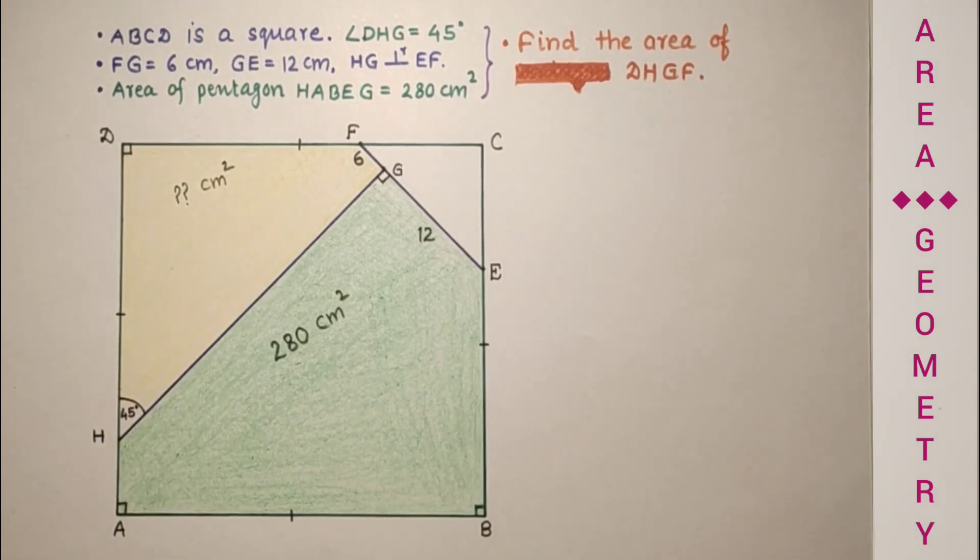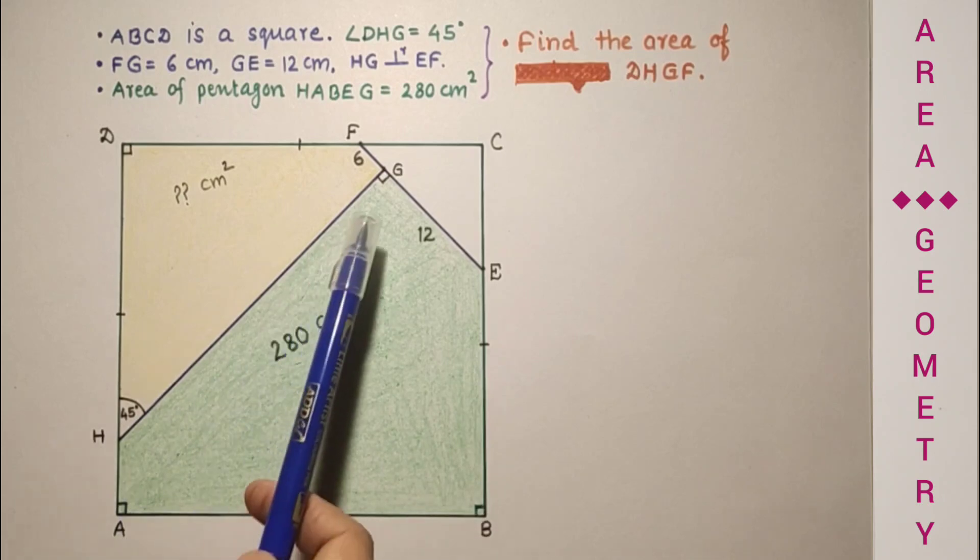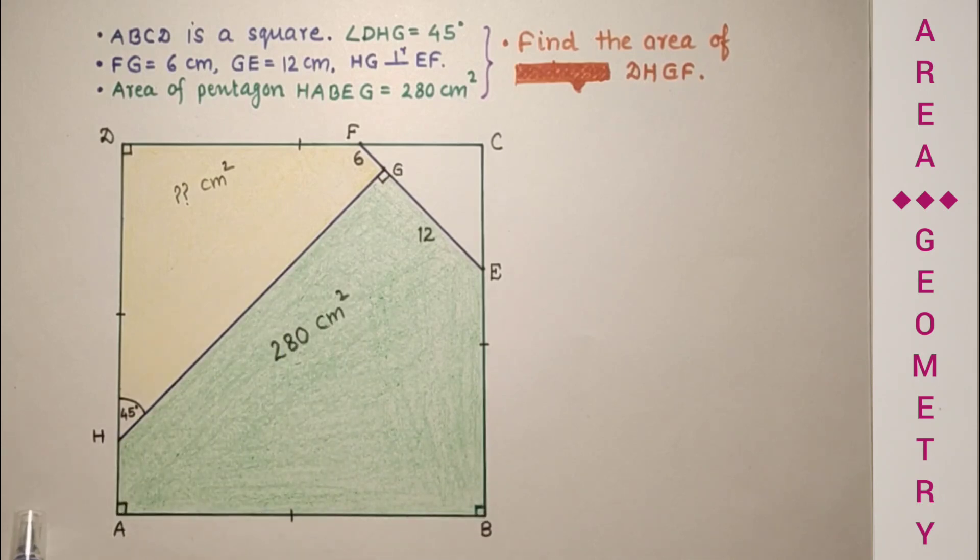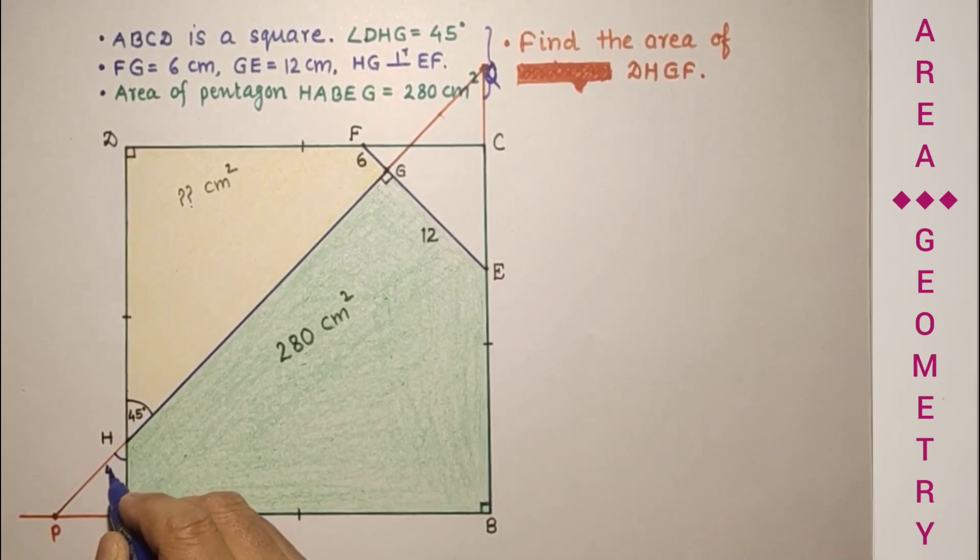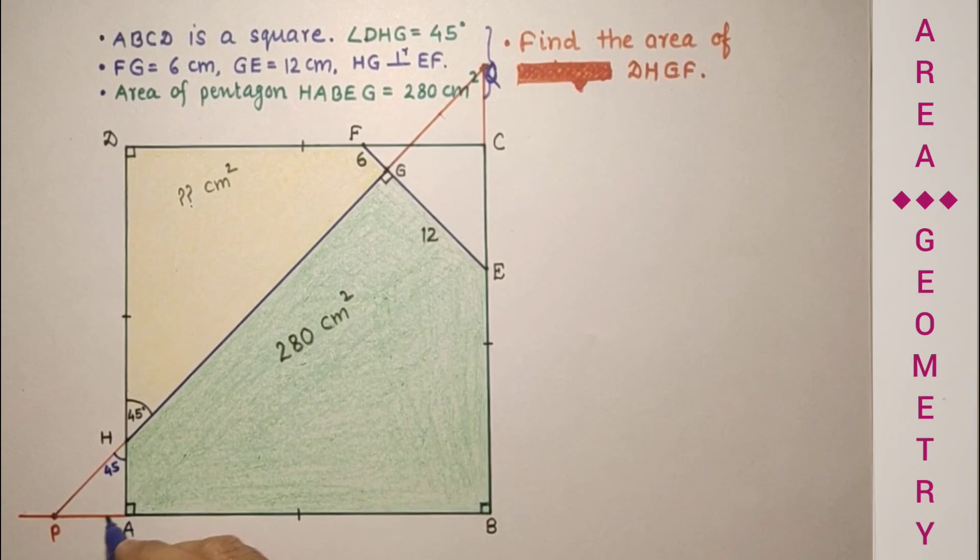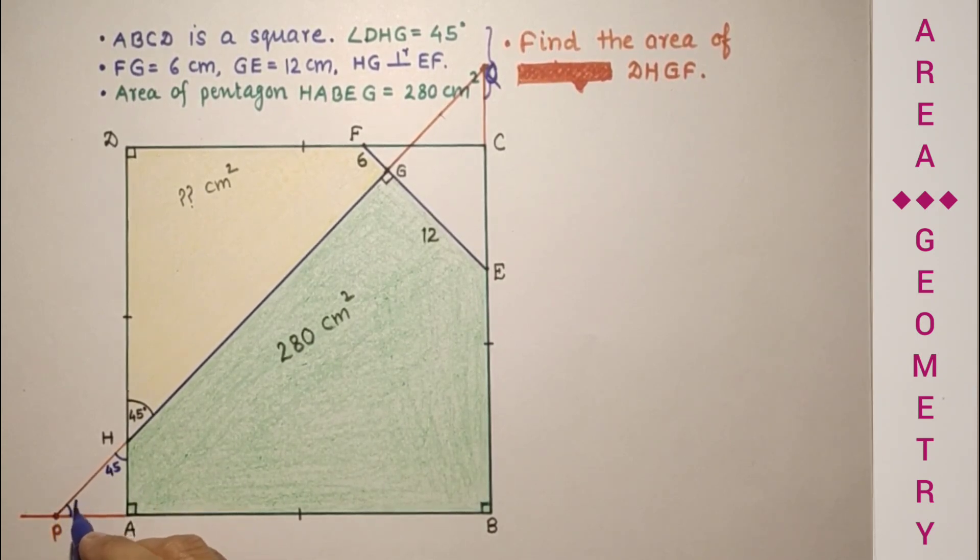We will discuss this problem in two methods. In both methods we need some constructions. In the first method, if we extend BA and extend GH, they will intersect. In the same way, extend BC and extend BH to P, and GH extended will intersect at P. Since this is 45, this will also be 45, and because this is 90, this is 45, so this will also be 45.